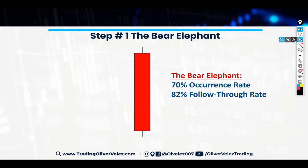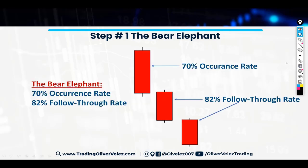So: 72% occurrence rate, 82% follow-through rate. Now let's go to the next thing. The 82% follow-through rate states that after the elephant bar — the first red bar you see — there should be 82% of the time more downside, more red to come. It's not over when you identify this bar. Now there's something I have to explain to you about what an elephant bar is.